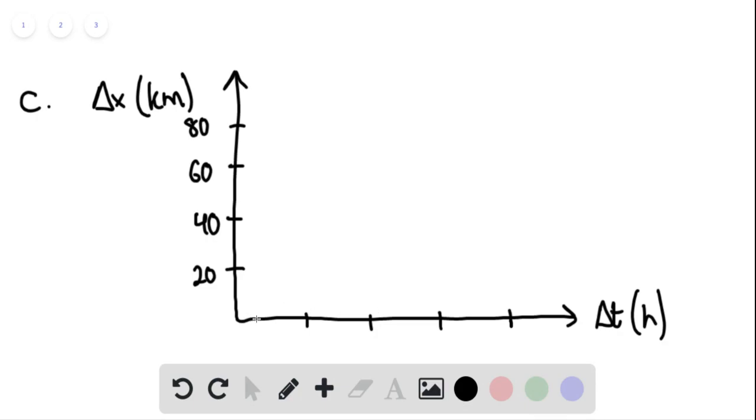So we can say that at 1.33 hours, if this is 0.5, 1, 1.5, and 2. At 1.33 hours, which would be approximately here, we're at 40 kilometers. And then at 2 hours, we're at 80 kilometers. So this would be the path.